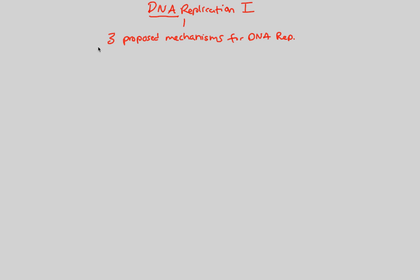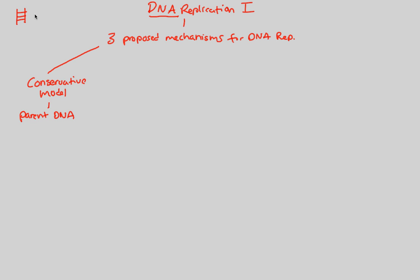The first one is called the conservative model — that's the actual name — for DNA replication. In this model, the parent DNA molecule is what we need to replicate. We have a parent DNA molecule, a basic ladder structure, that we need to turn into an exact copy. How does this happen? What allows this to copy itself so that we end up with not one, but two total DNA molecules?